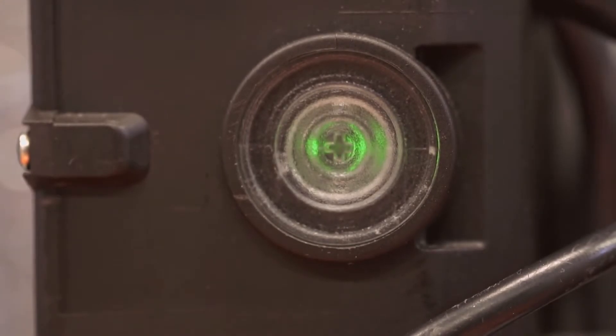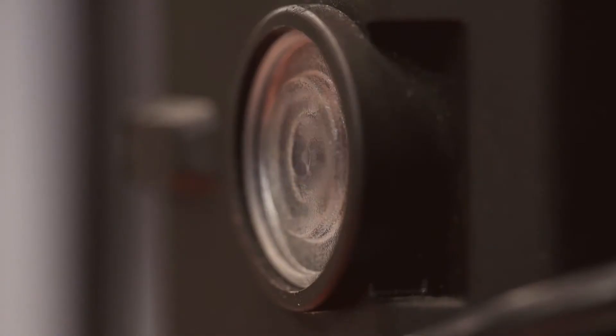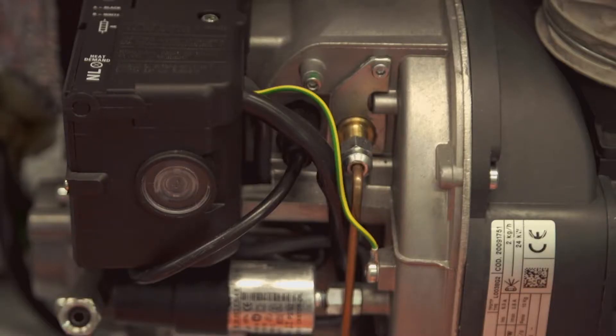When the burner is running normally the reset button will be green and if it locks out it'll change to red. Other operating modes and faults are indicated by different colors. Check the installation instructions for details.